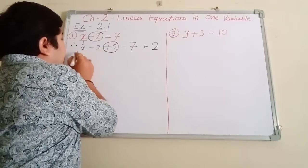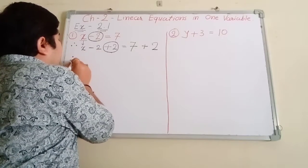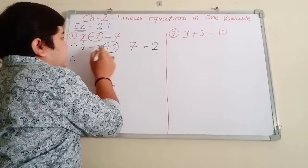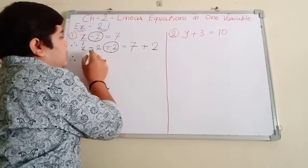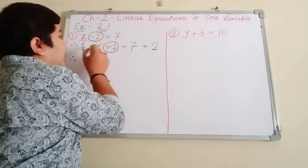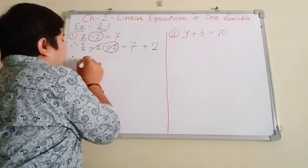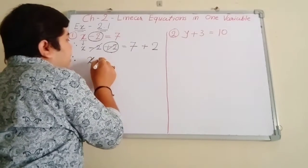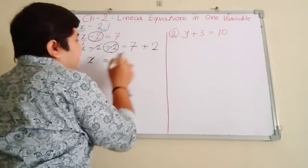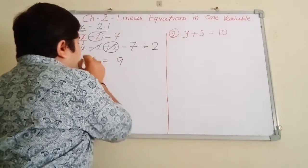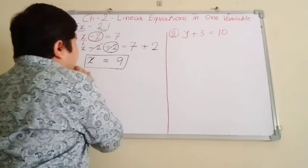Now, you know that minus 2 and plus 2 together will cancel each other. So here we will write x equals 7 plus 2. So finally, you got your answer: 9.